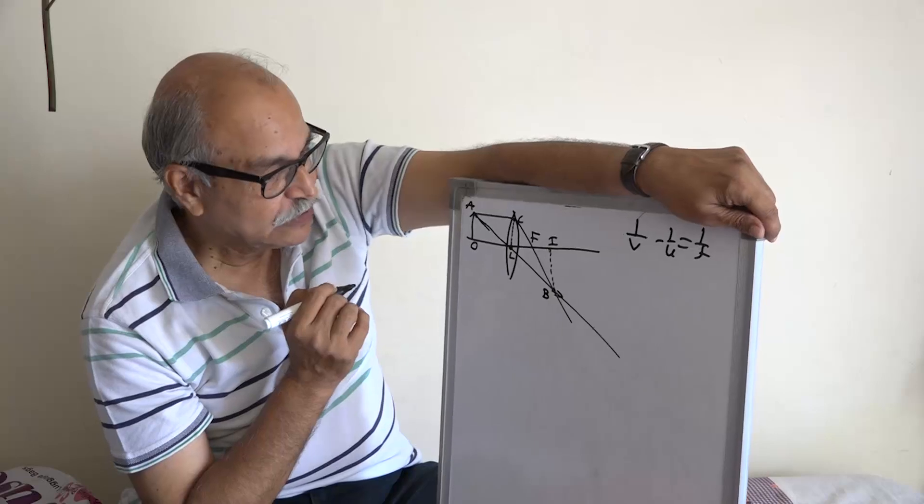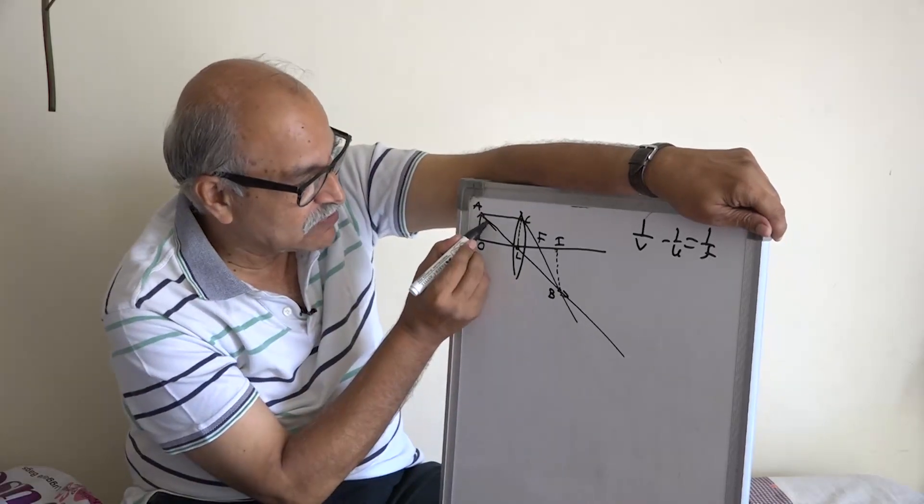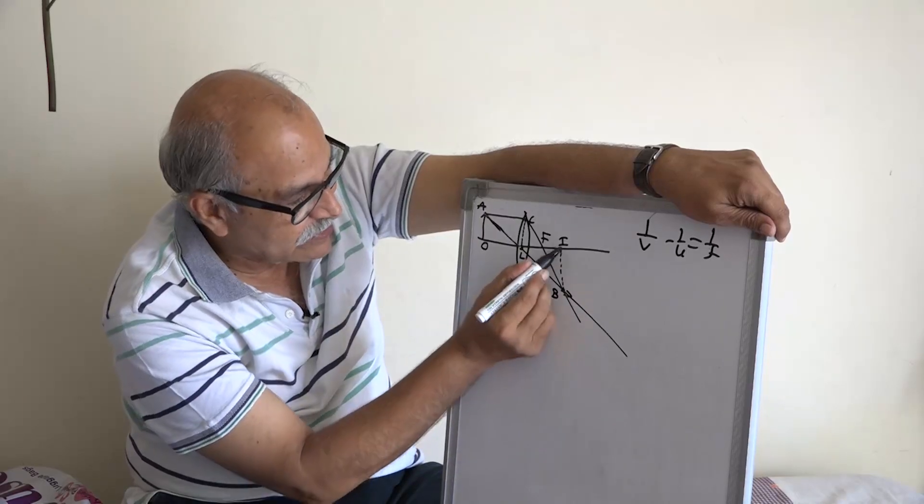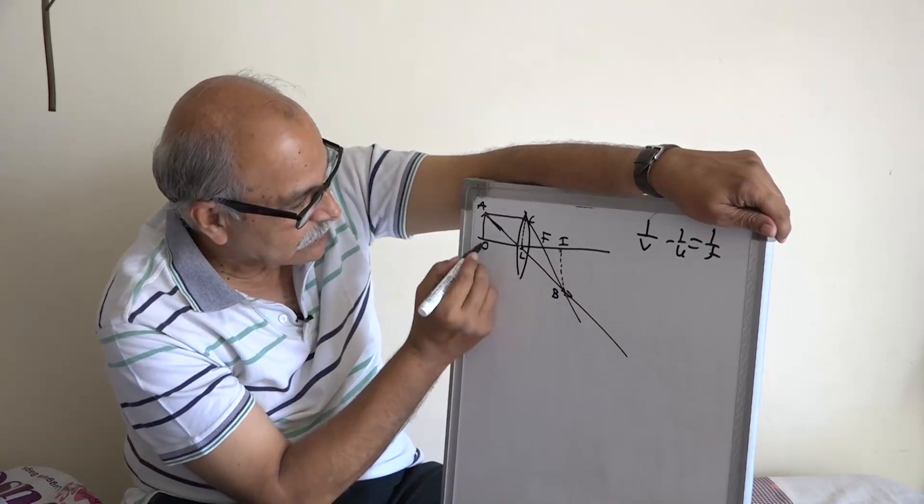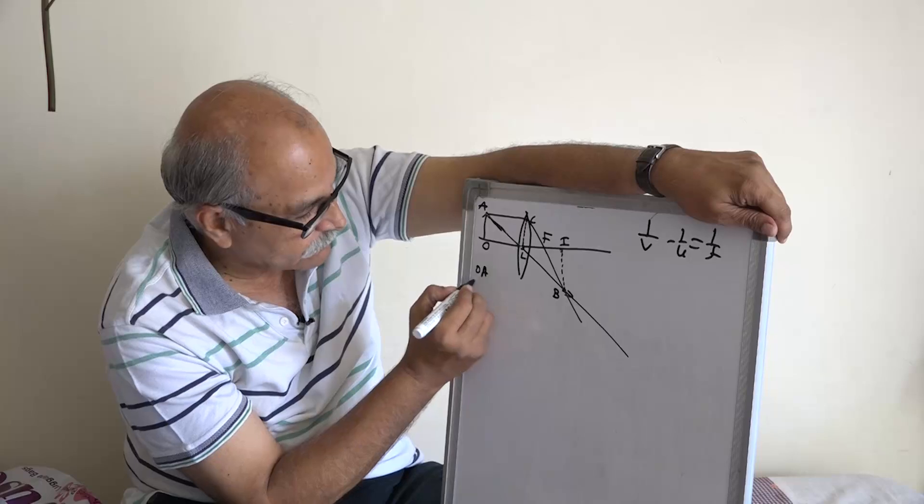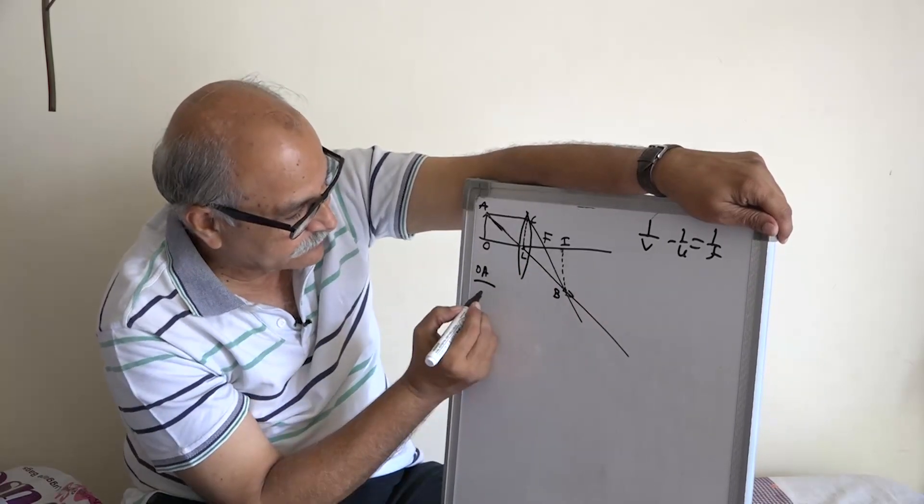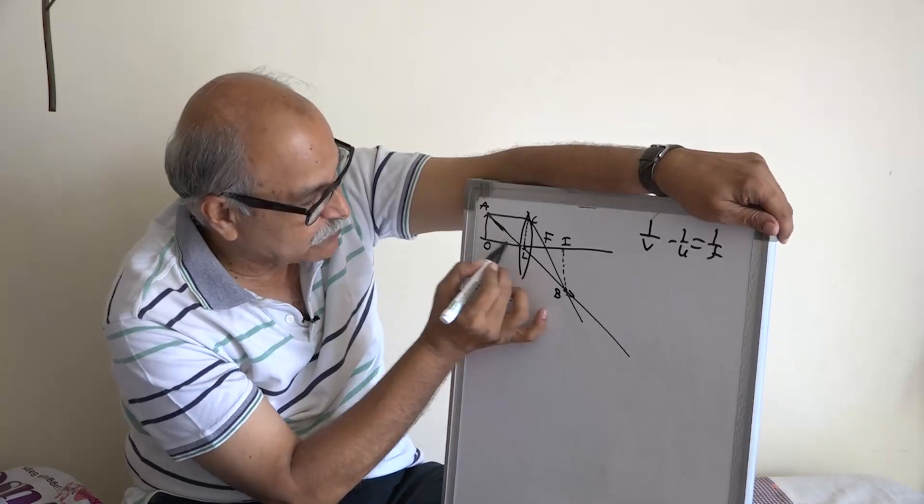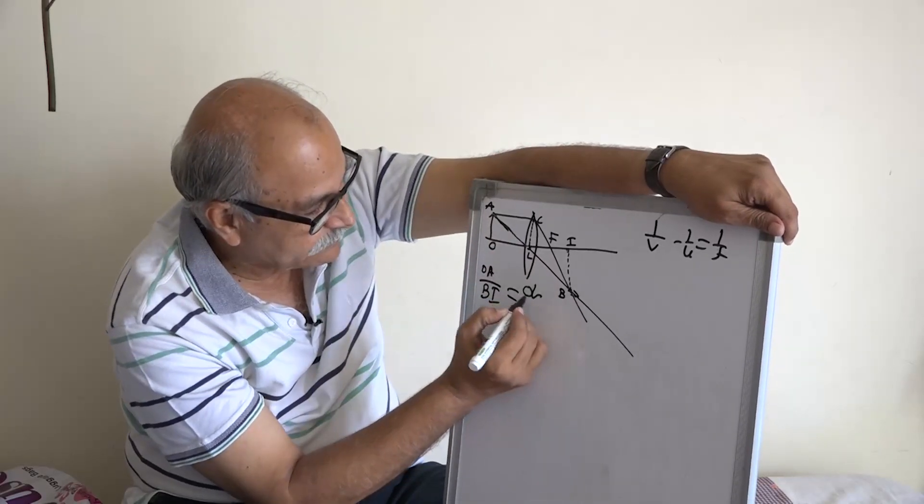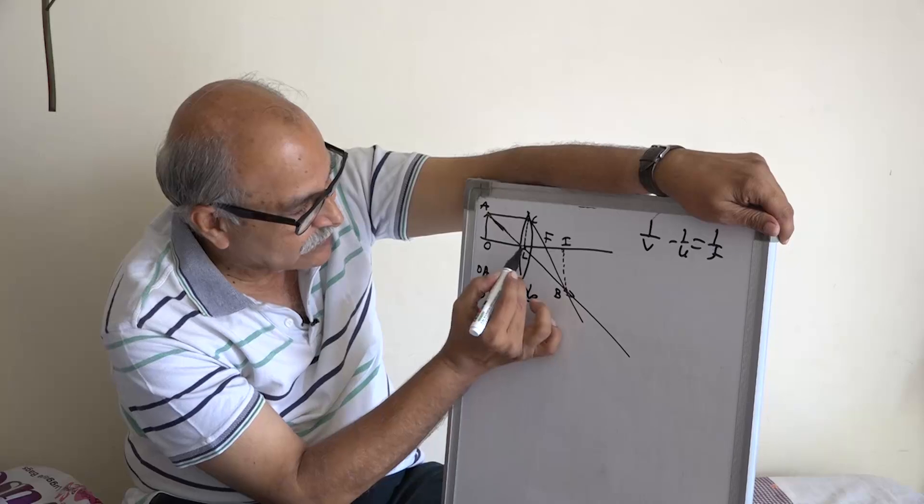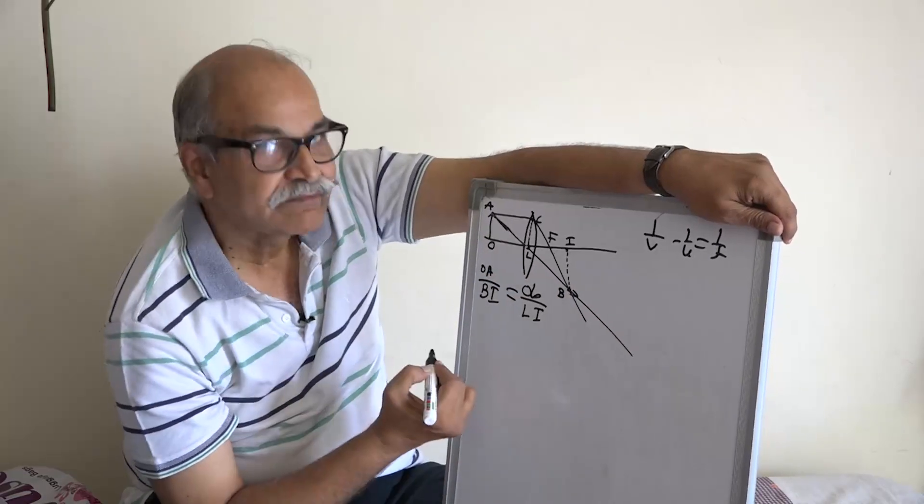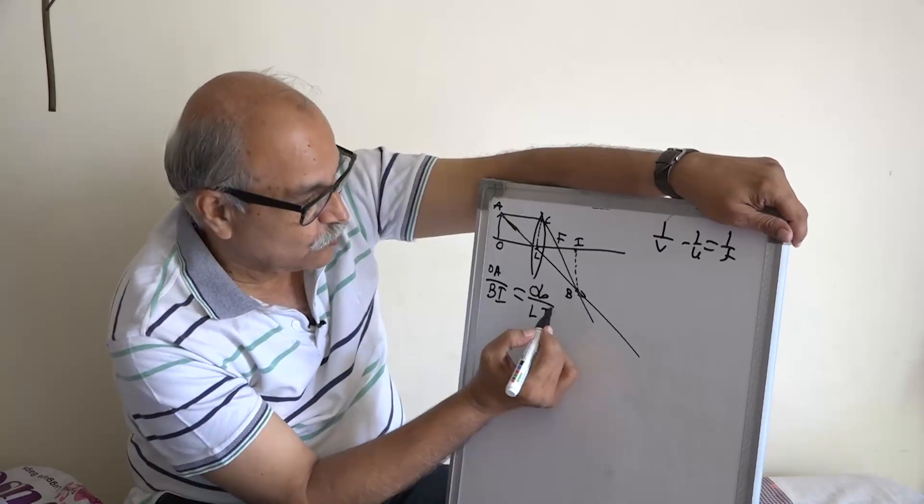What do you do? You take similar triangles, this triangle and opposite this triangle, and then you write O,A divided by B,I. Correspondingly this side O,L and then divided by this side L,I.